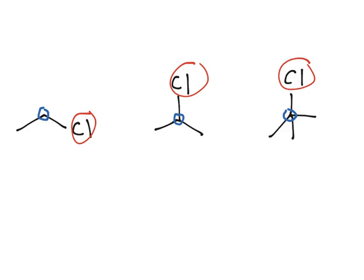And so, primary means that the carbon in blue that you're looking at is only bonded to one other carbon. And so, what that means is here it's bonded to one carbon. Here this carbon is bonded to two carbons. And here it's bonded to three carbons.